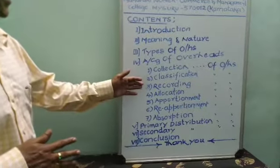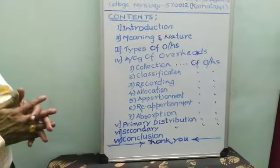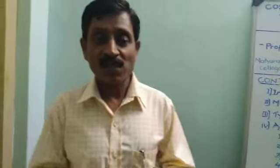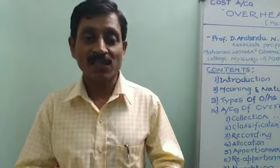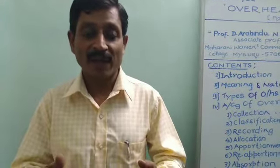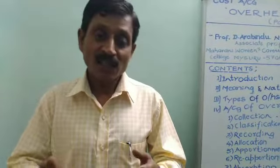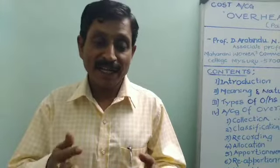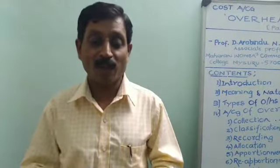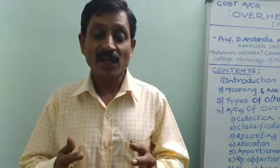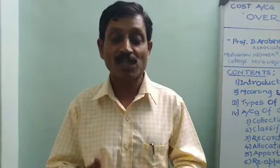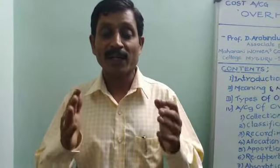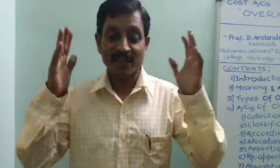After collection, classification, and recording, we have to allocate the overheads. Allocation means it is a process of charging the entire amount of overhead to a particular cost centre, particularly to a particular department. There are some specific costs related to a specific cost centre or department. Therefore, the full amount is charged to that particular department only. Allocation refers to a process of charging the entire amount of overhead to a particular department or cost centre.